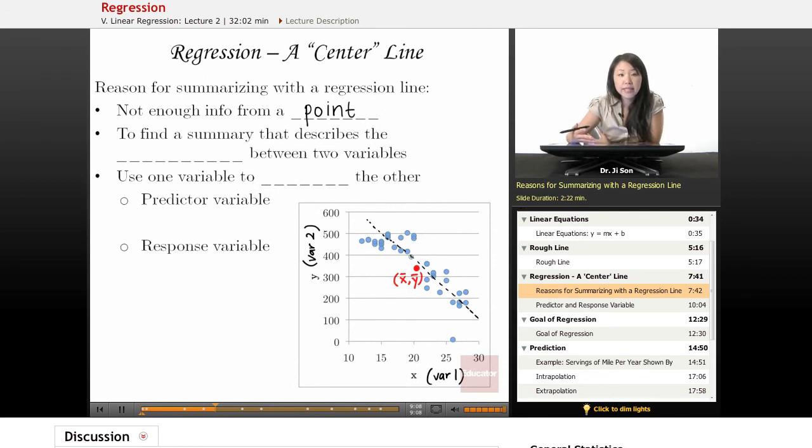That point might not give us enough information about this whole distribution. Remember, we talked about how to summarize a distribution. And we want that trend. We don't just want a point, we would like a trend. And when there's not enough information from a point, it's useful to have a center line.